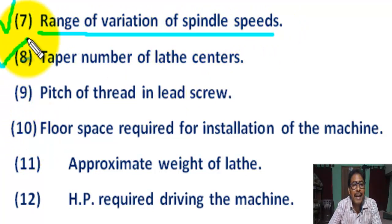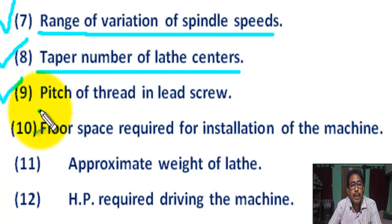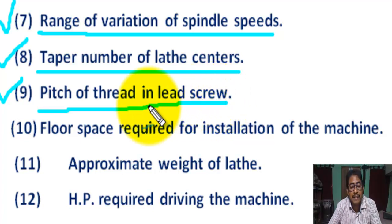Number eight: taper number of the lathe center — that means the taper of the lathe center must be specified. Number nine: pitch of the lead screw. The lead screw of an English lathe may be four TPI or eight TPI, where TPI means threads per inch. The pitch of the lead screw of a metric lathe is six millimeters.